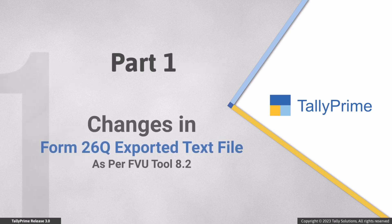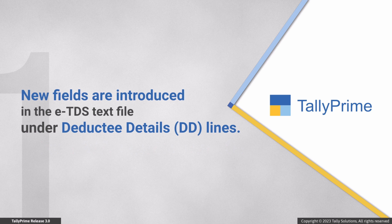Let's first see how to make changes in TDS Form 26Q in alignment with FVU Tool 8.2. As per the changes in FVU Tool 8.2, new fields are introduced in the e-TDS text file under the deductee details DD lines. After recording the transactions, you can export TDS Return Form 26Q.